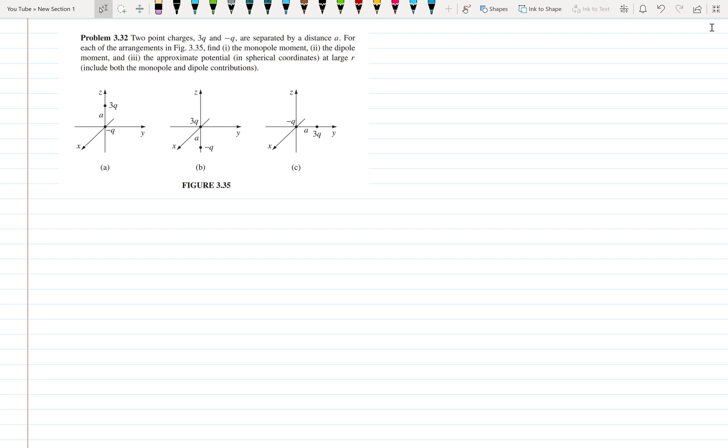Hello everyone, welcome back. Let us start problem number 3.32 which is on page number 158. We have two point charges 3Q and minus Q separated by distance A for each of the arrangements, and we need to find monopole moment, dipole moment, and the approximate potential.